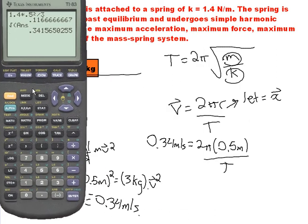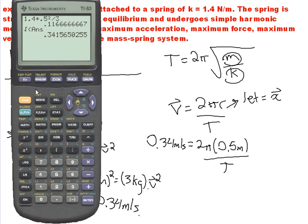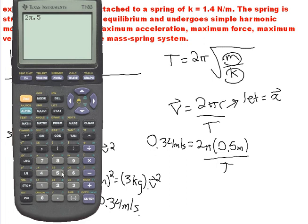Which is kind of neat that the two are related even though they probably don't seem all that related. Alright? So let's just see what we get here. 2π times 0.5 divided by 0.34. I think that looks pretty good. It's going to give us a period of 9.2 seconds.